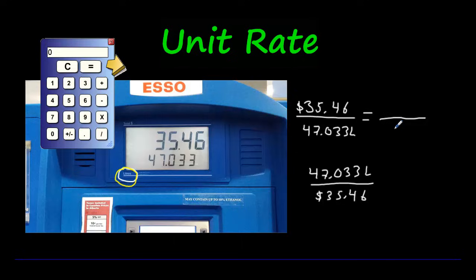Turn this into a unit. We have to put one liter. To turn this into a one, you have to divide by itself and divide the numerator by the same number, 47.033. Let's do that. We're going to get $35.46 divided by 47.033, and you get $0.75. Rounded would be $0.75 because that's a three beside it, so that five stays the same. Make sure the dollar sign is there. Dollars with dollars. You get $0.75 for one liter. Now mind you, that's including taxes and all that. So keep that in mind.